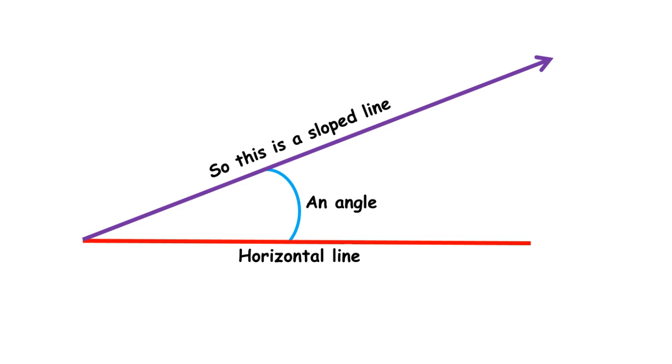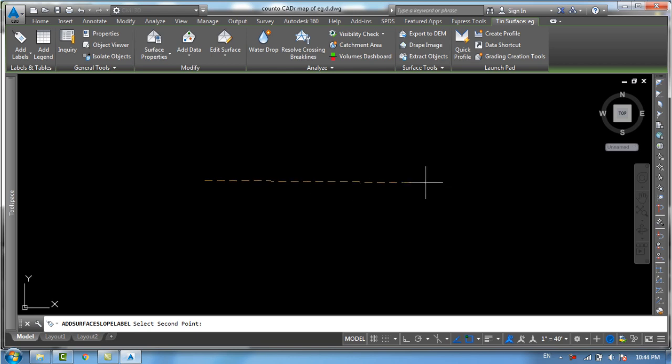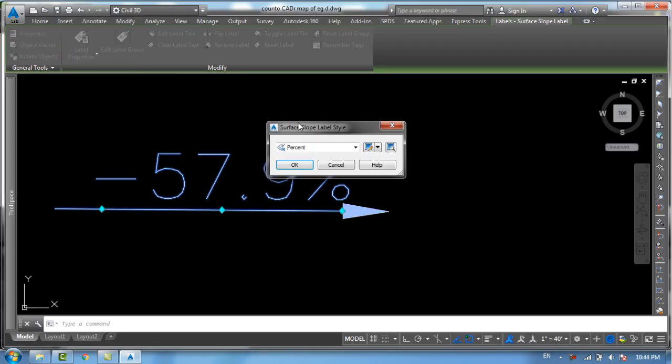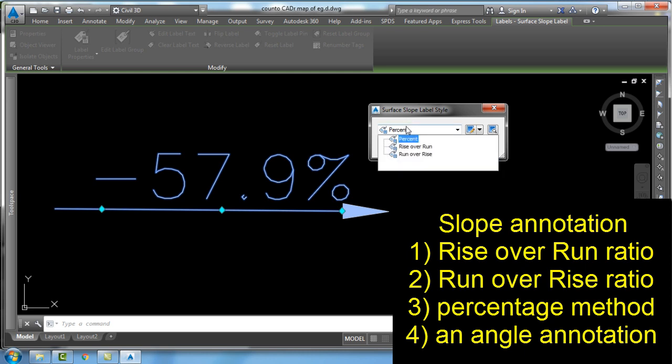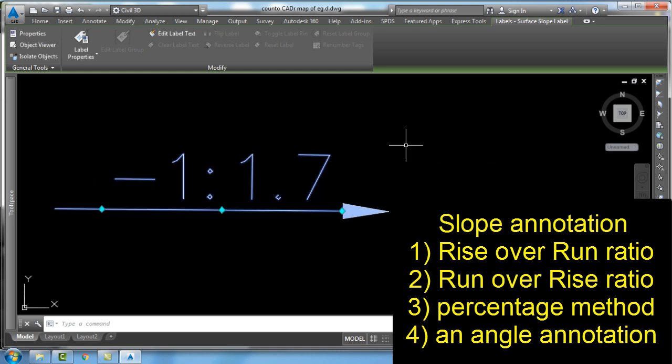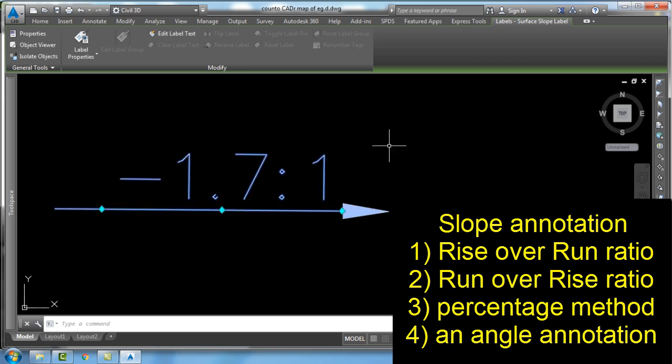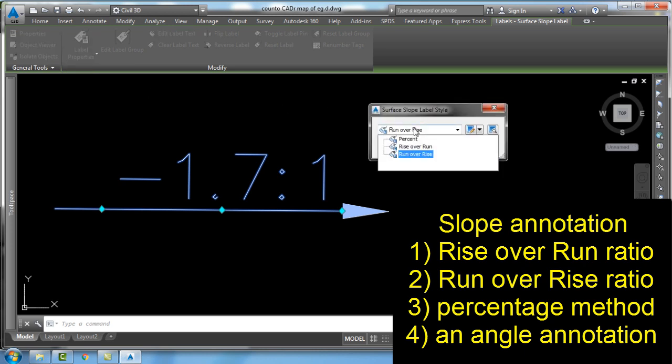There are four common ways to describe the steepness of a line, road, or railway line in a mountain. One is by the rise and run ratio. Another is by the run and rise ratio, which is actually wrong mathematically but works practically.